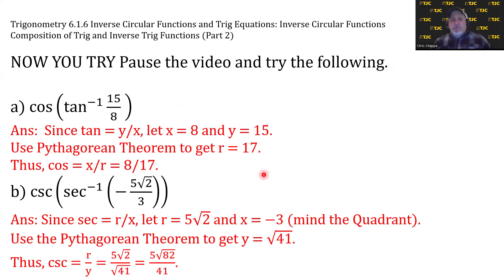Second one, you've got to be a little more careful because of the square root. Using the inner trig function, secant is r over x, so r is 5 square root of 2 and x is negative 3. Mind your quadrant, but honestly, r is never negative. So if you have a negative ratio and one of the letters is r, the negative goes on the other. Using the Pythagorean theorem carefully, we get y is the square root of 41. And so cosecant is r over y, which ends up being 5 square root of 82 over 41.